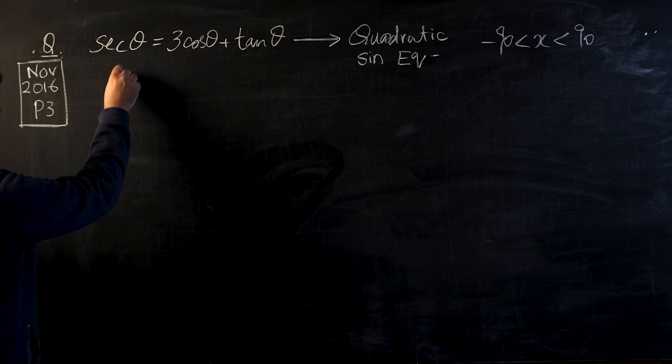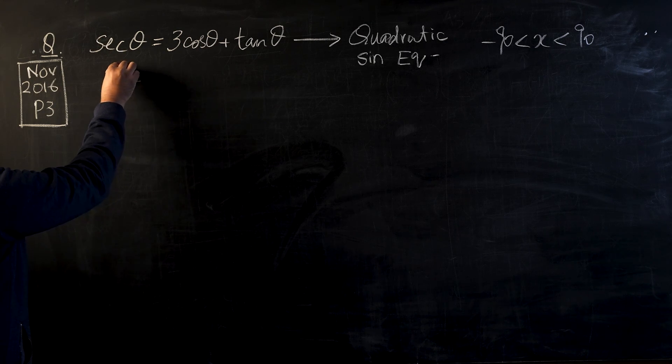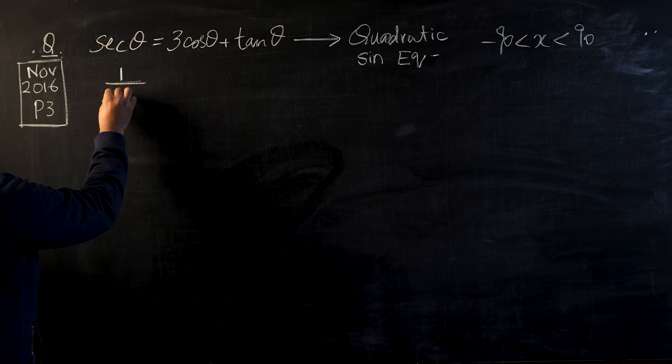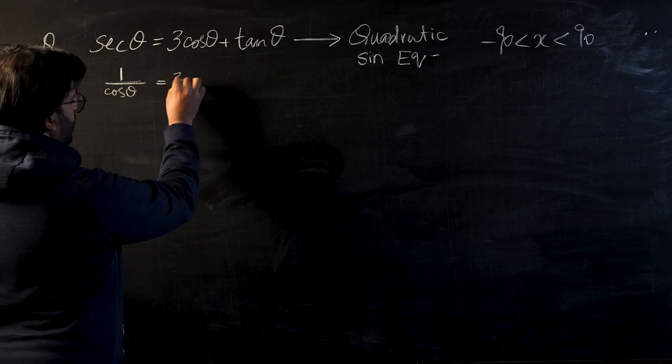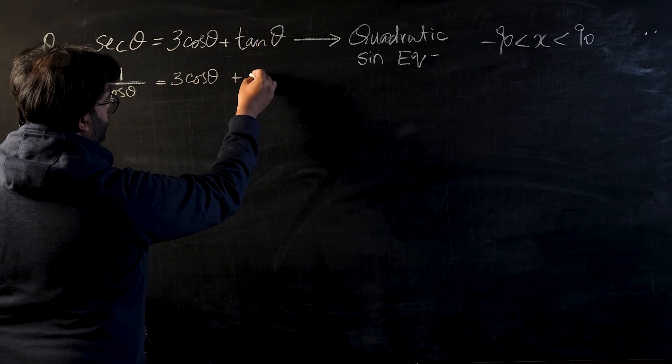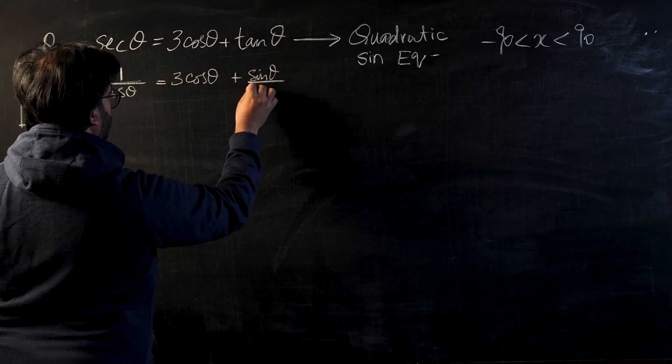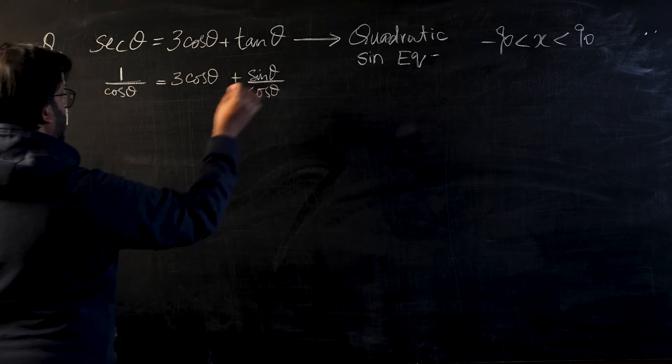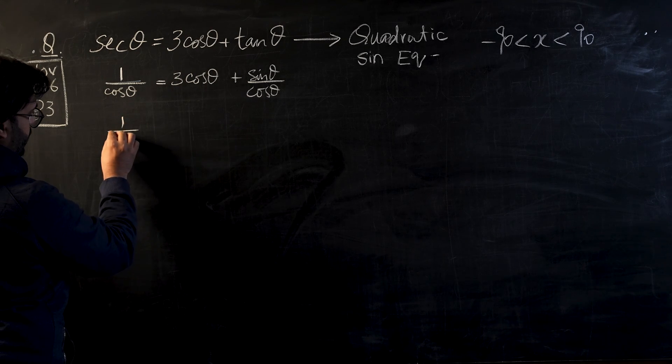We know secant theta is one over cos theta, so we can write secant theta as 1/cos θ minus equals to 3 cos θ plus tan theta can be converted to sine theta over cos theta.